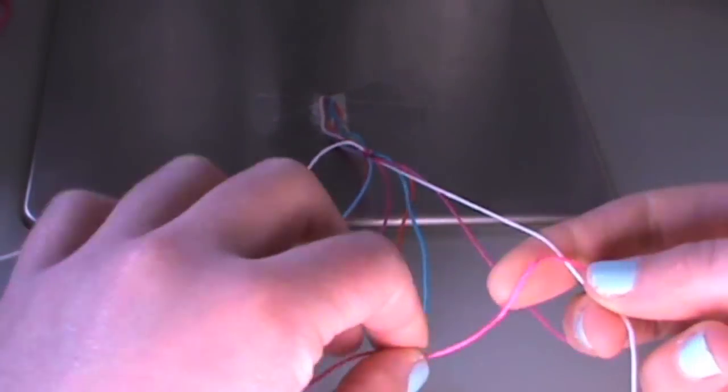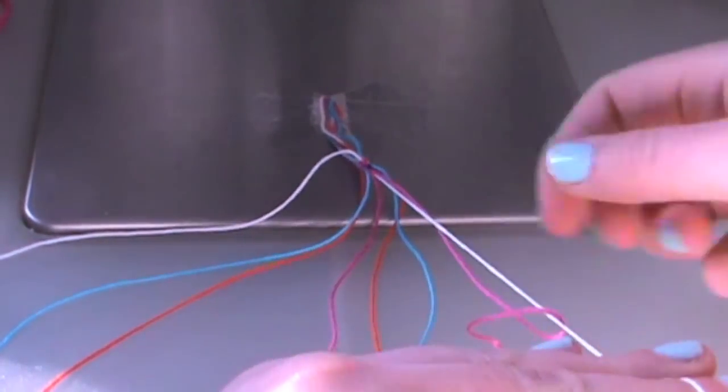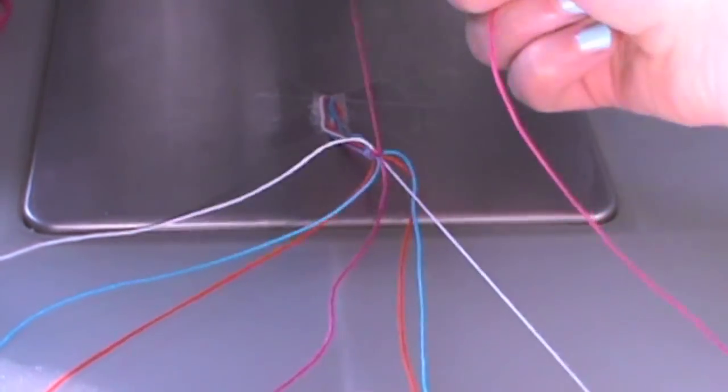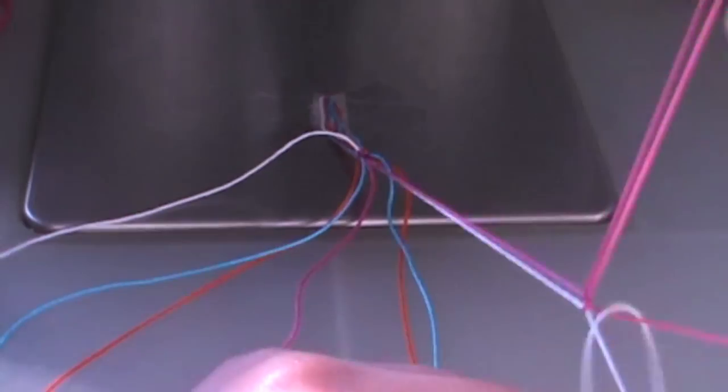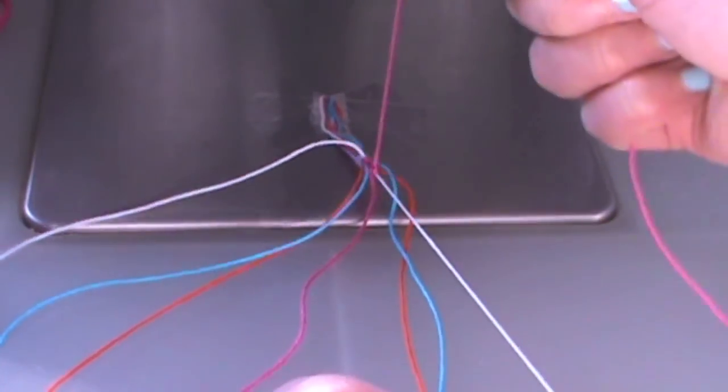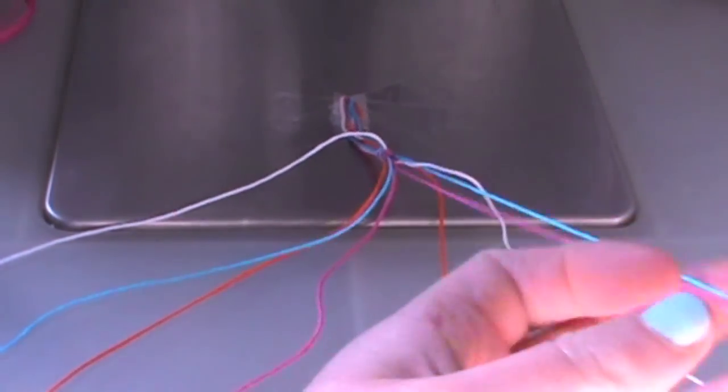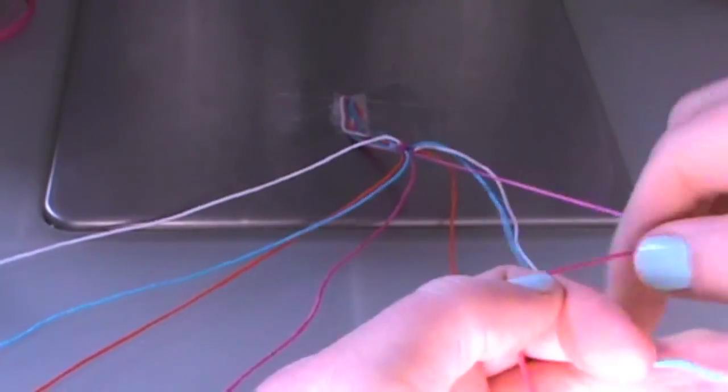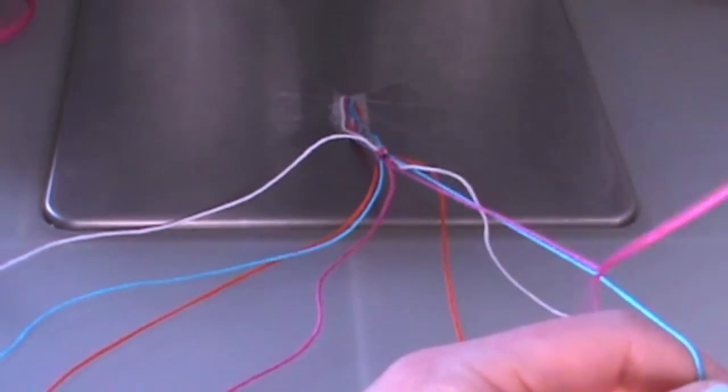Back to front four or a P—loop it through and make a knot. Back to front four, pull it through, make a knot. Now this is why it's important to clearly spread out your work, because you don't want to knot the wrong colors because then it becomes all a big jumbled mess.